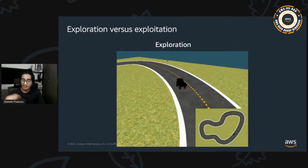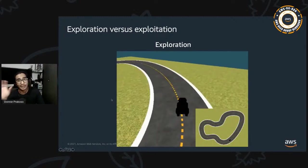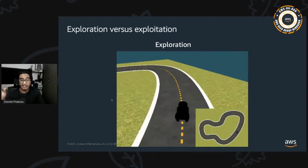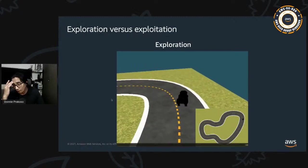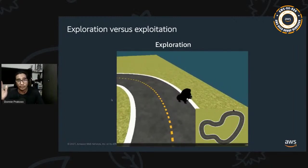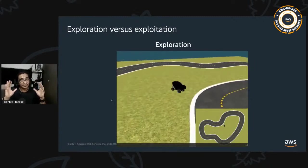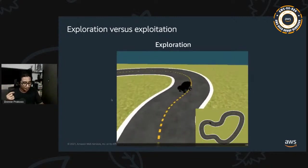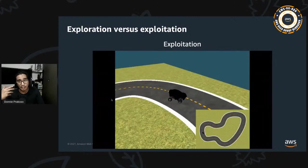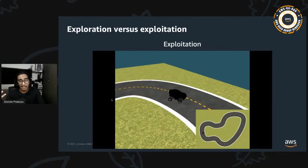To get the best model, the agent first needs to explore the grid to discover large rewards that can drastically change driving behavior — this is called exploration. As the agent gains more experience through exploration and iteration, it starts exploiting what it has learned, settling on actions that repeatedly yield higher rewards. So we have two phases: exploration and exploitation.